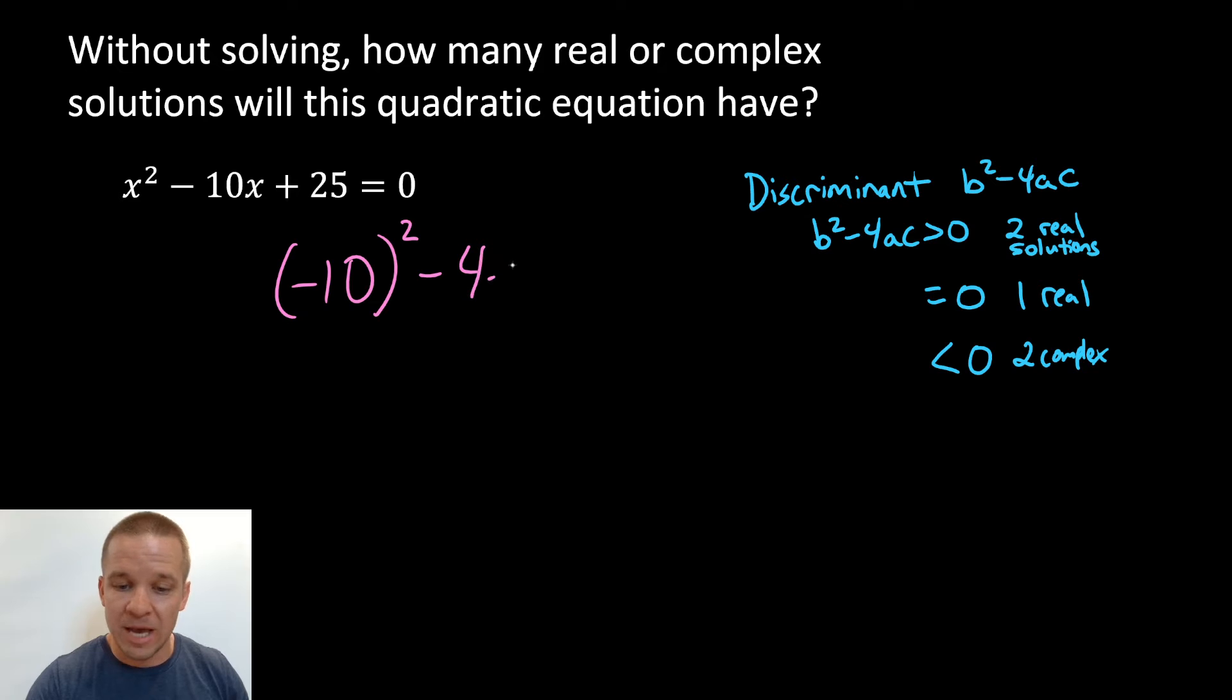Minus 4 times A, which is 1, times C, which is 25. So I'm going to have 100. And then 4 times 1 is 4 times 25 is 100. And that's negative, right? So minus 100. This is just zero.